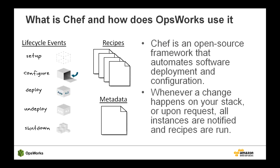OpsWorks triggers events during the application lifecycle, such as when your instance is provisioned or an application is deployed. This lets you perform specific configuration tasks using Chef recipes that are attached to those events. Metadata is automatically generated by OpsWorks — for information such as the instances running in a layer and layer-specific parameters. You can also specify metadata yourself that gets passed to the recipes.